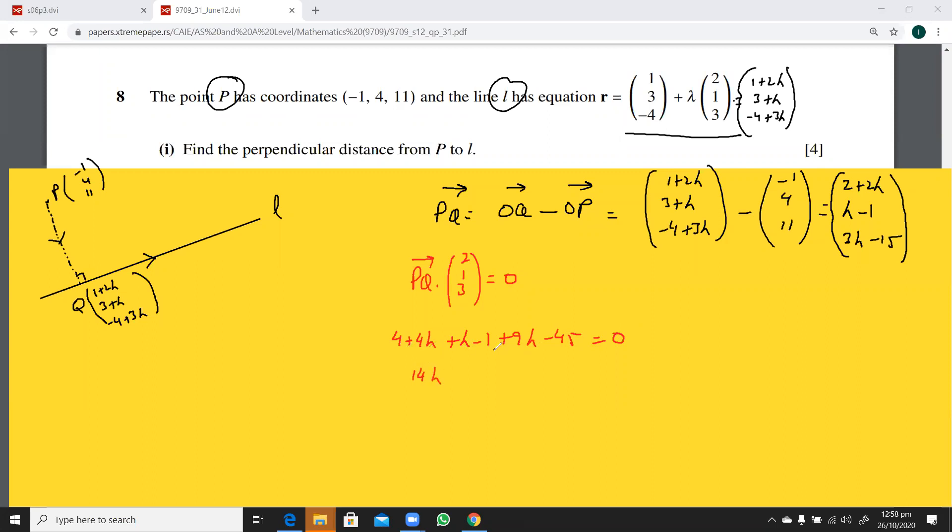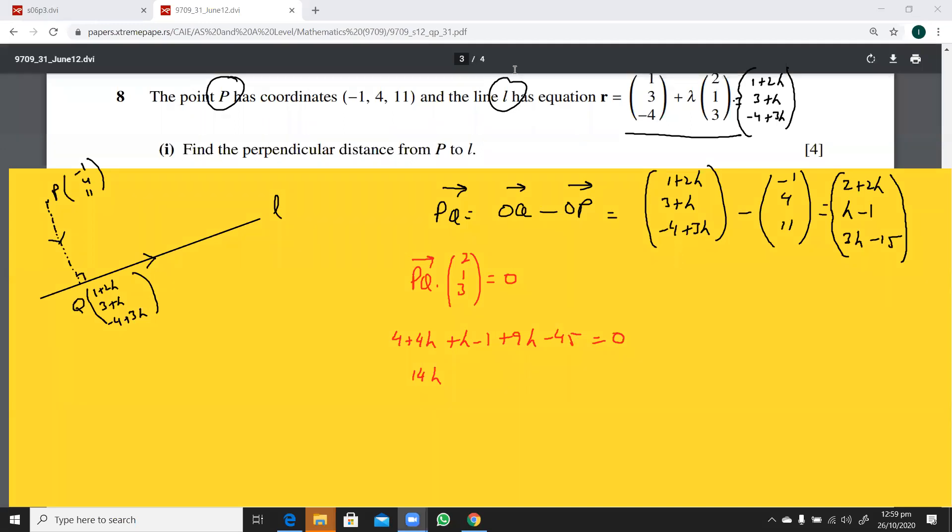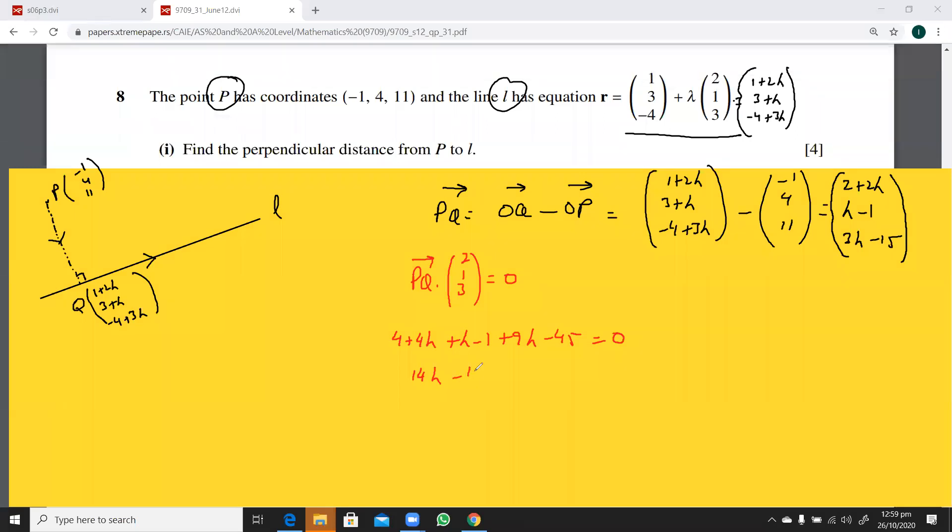4, 3, and this is going to be 42. So, yeah, we have got a nice value of this, this is minus 42, so this lambda is going to be equal to 3. If you don't get a nice value, a very weird kind of value, then you need to check all your working.